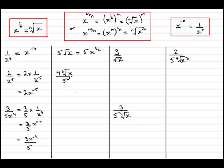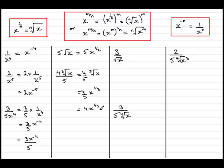In this example we've got 4 multiplied by the cube root of x, all over 5. Because it's all over 5, we can think of this as 4 fifths multiplied by the cube root of x. The cube root of x by our theorem is x to the power 1 third, so we get 4 fifths x to the power 1 third. We could leave it like that, or write it as 4x to the 1 third all over 5 — either way it's the same.